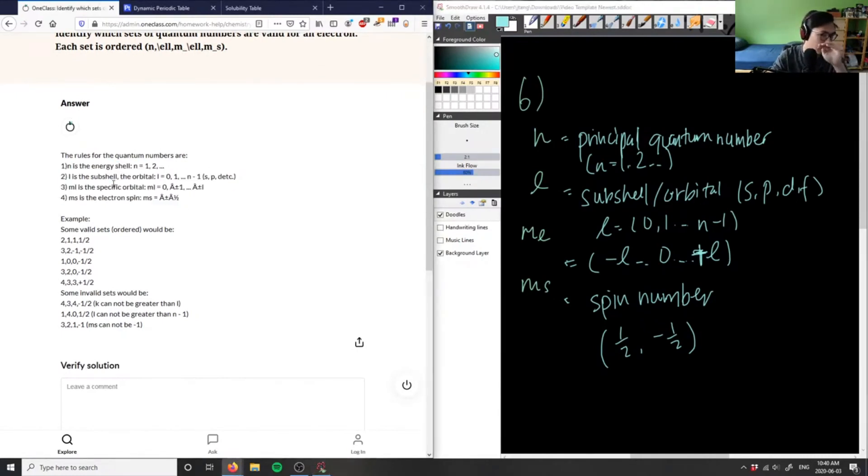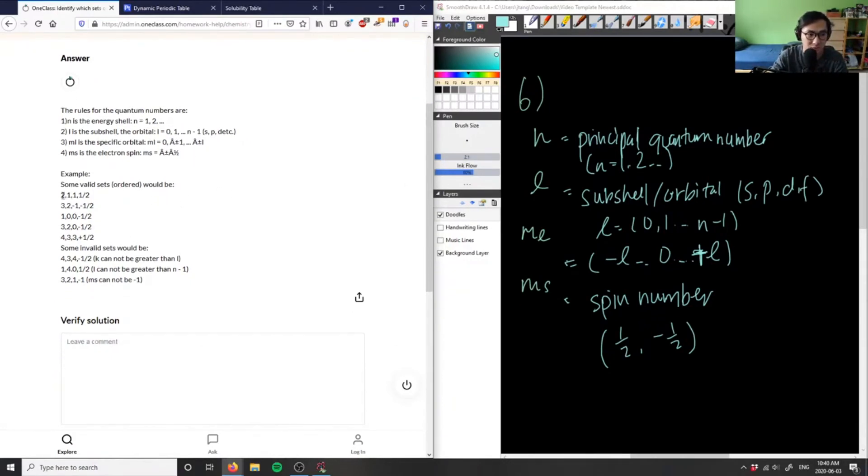So I believe that this here is a good enough solution. I think this is supposed to be l, but I don't think they had it here. So valid sets here: they have two here which is our principal quantum number.